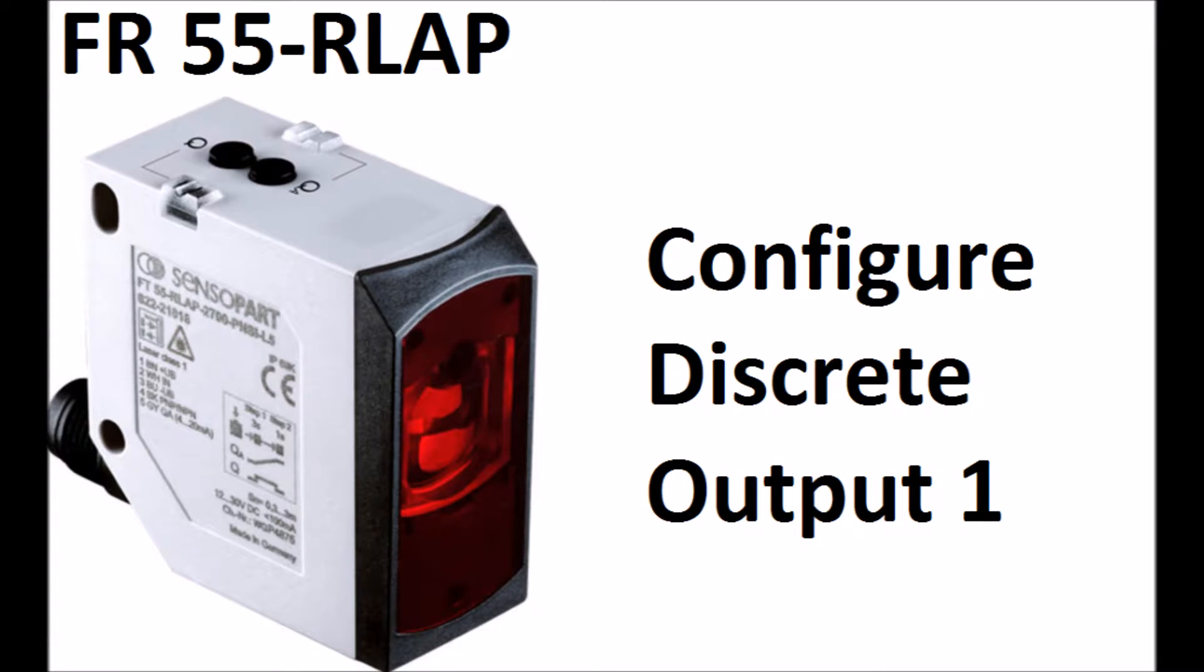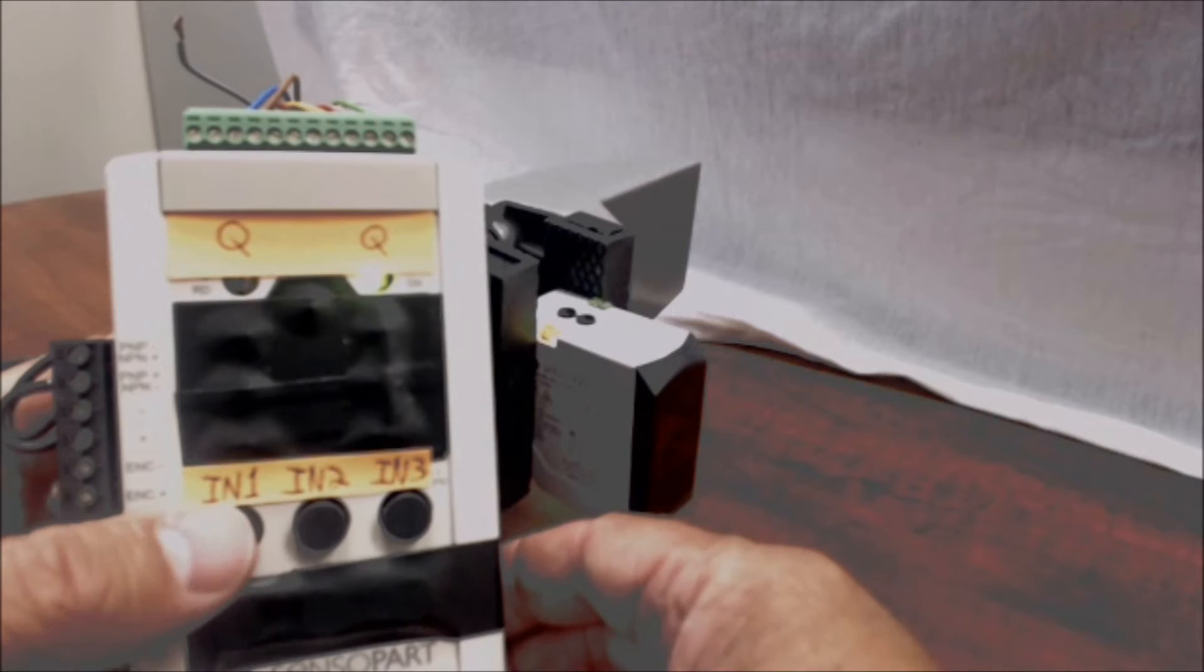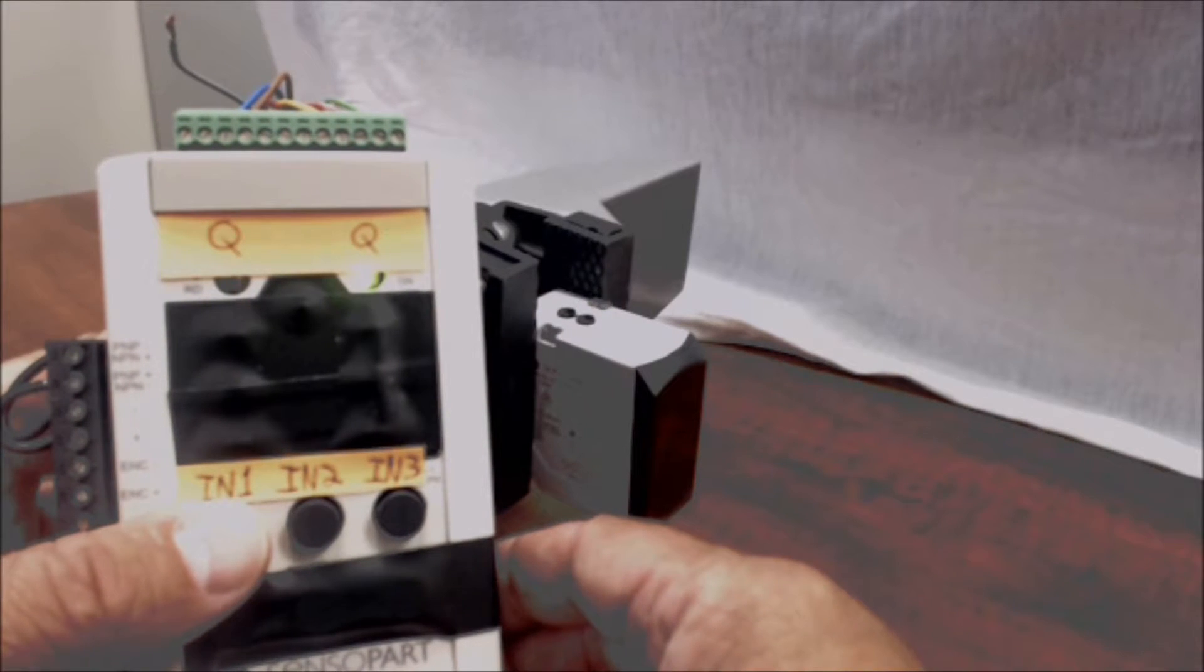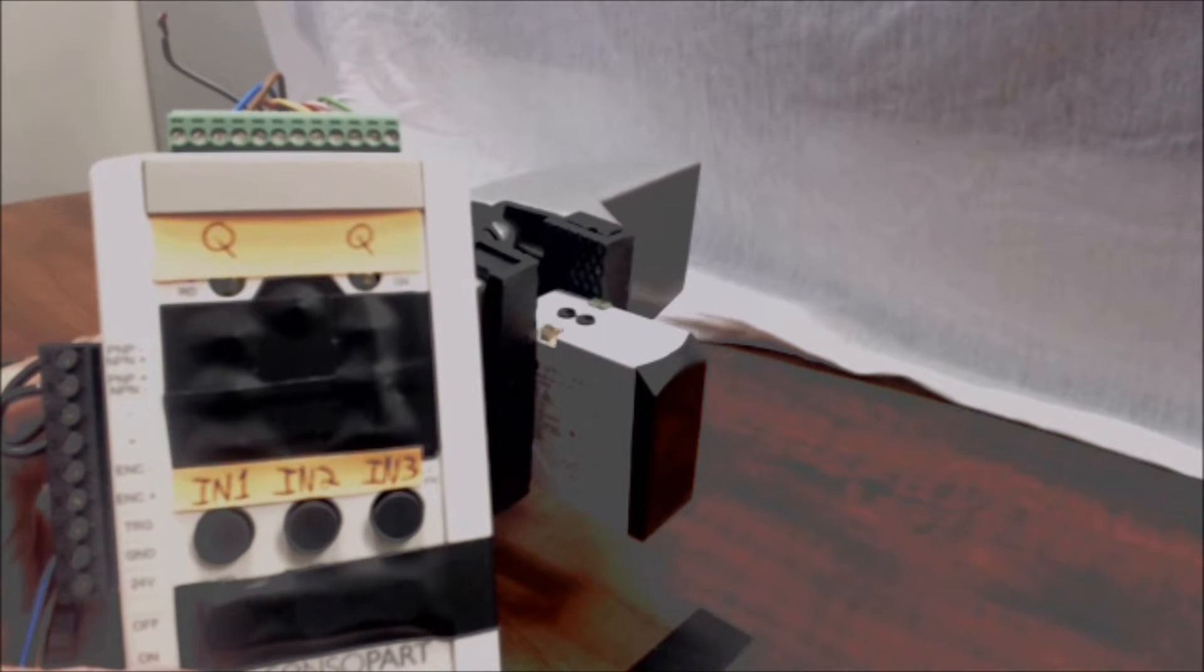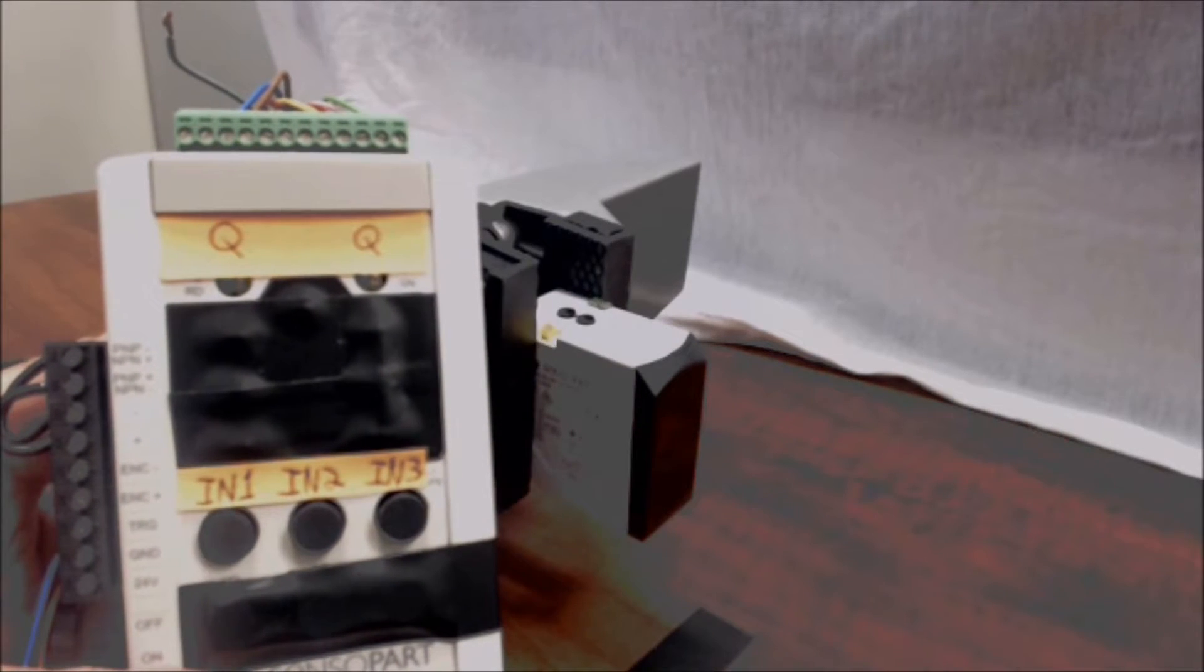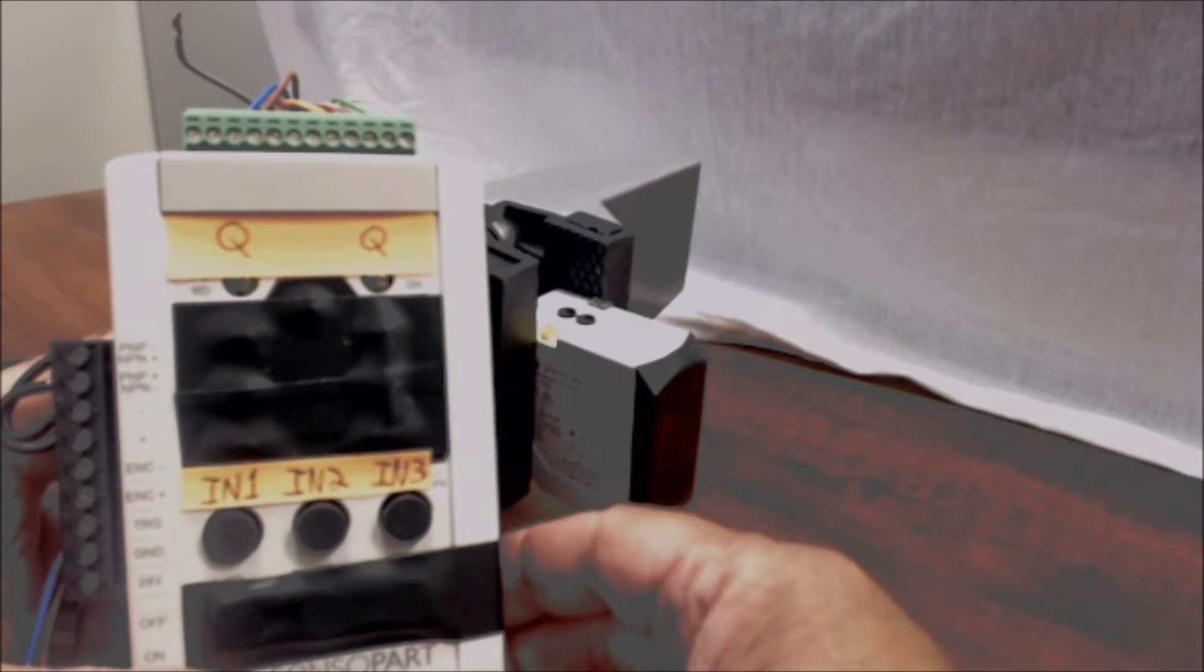Teaching the discrete output in window mode is the same as the analog. You just use the other teach button or the other input. So here, we'll press and hold the other input for more than three seconds. We'll watch the sensor until the lights flash. There we go. Now, we'll move the target to the next position, and then we'll tap the button. And here we go. Tap. Sensor's taught.